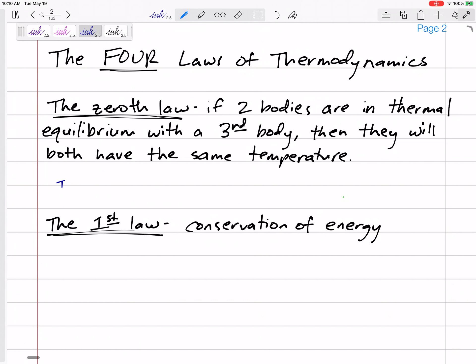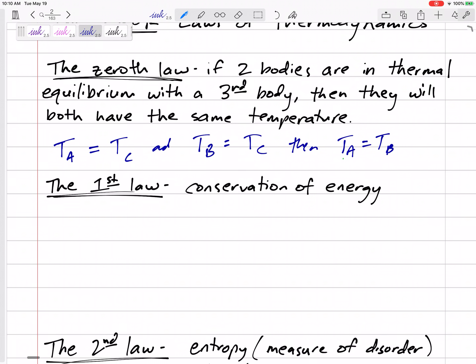What it just means is that if the temperature of fluid A is equal to the temperature of fluid C, and if B is also equal to the temperature of fluid C, then the temperature of A would be equal to the temperature of B. Makes perfect sense. A little bit obvious. That is the zeroth law. Two bodies are in thermal equilibrium with a third, then those two have the same equilibrium.